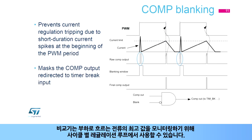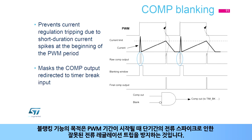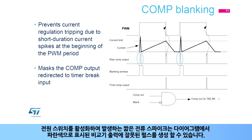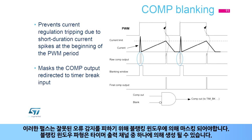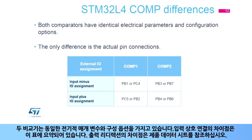The comparator can be used in the cycle-by-cycle regulation loop for monitoring the peak value of the current flowing into the load. The blanking function prevents incorrect current regulation tripping due to short duration current spikes at the beginning of the PWM period. Short current spikes caused by activating power switches can produce false pulses on the comparator output. These pulses need to be masked by a blanking window to avoid false fault detection. The blanking window waveform can be generated by one of the timer output channels. Both comparators have identical electrical parameters and configuration options.